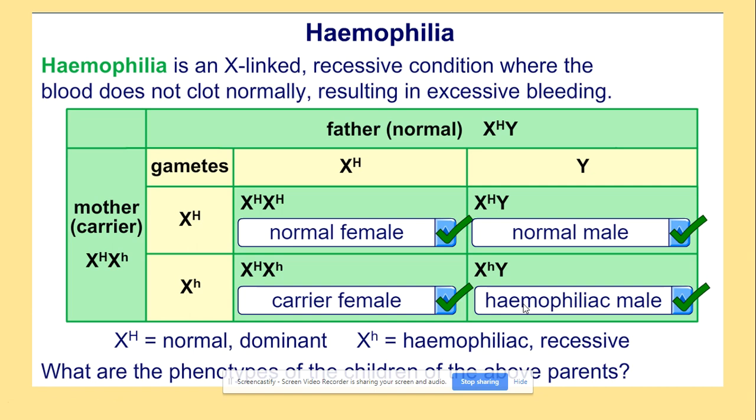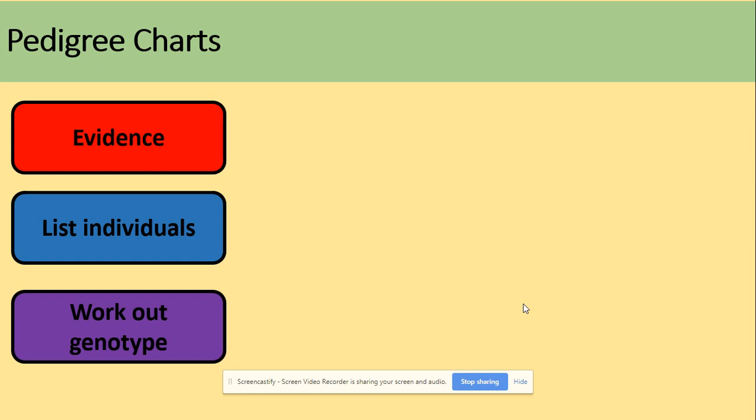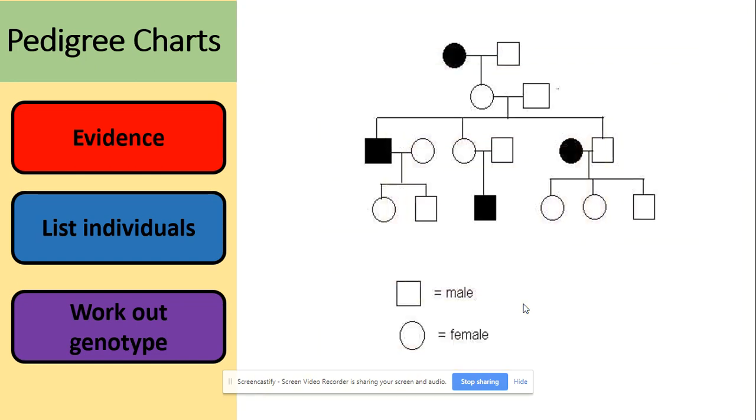Another thing that they could ask you to do is use pedigree charts. For pedigree charts, we need to work out the evidence, we need to back it up with the individuals, or you might be asked to work out the genotypes. The pedigree charts look like this - could look slightly different. We've got male, we've got female, black colors are shaded - it shows us the unhealthy individuals. What you could be asked to do, for example, is these individuals here could be numbered and you could be asked to explain the genotype.